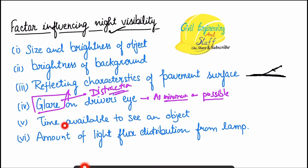The next factor is that the reaction time available to see the object on the road should be sufficient. We know about the PIEV theory — the brain needs a certain amount of time to process what it sees and then again a certain amount of time to react. So the illumination of the object should be such that ample reaction time is available to perceive and react to the object.